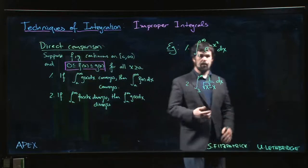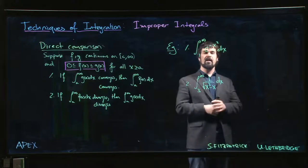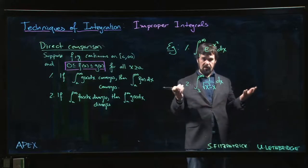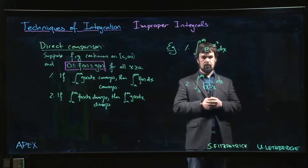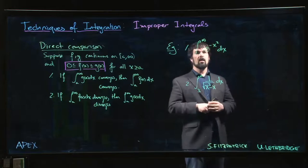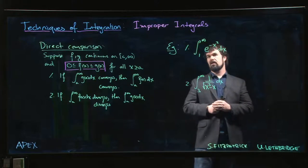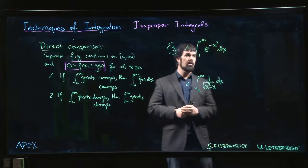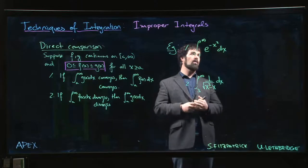So for something like this, we can't find an antiderivative for e to the minus x squared. This is not a function that has an antiderivative in terms of elementary functions. So how do you proceed? Well, there are a couple of options. The textbook gives one suggestion.